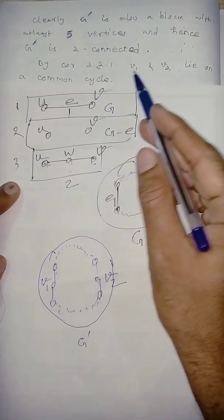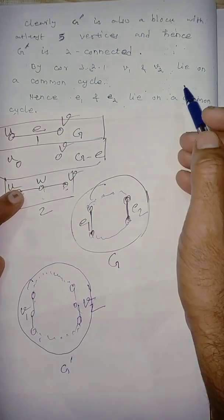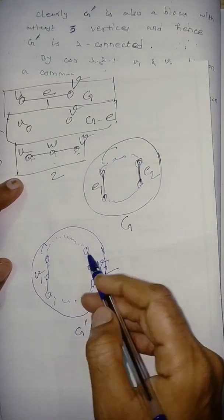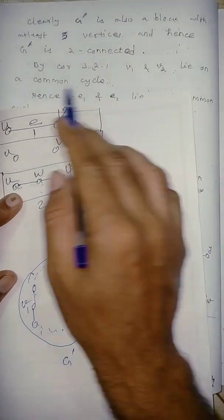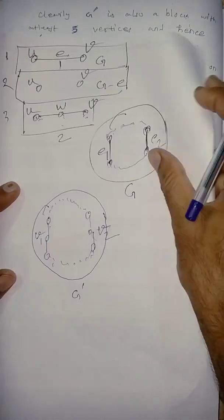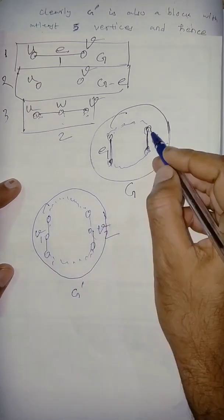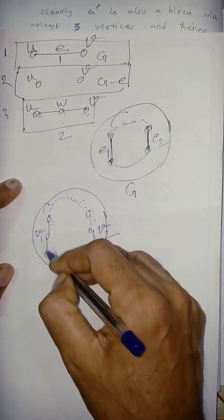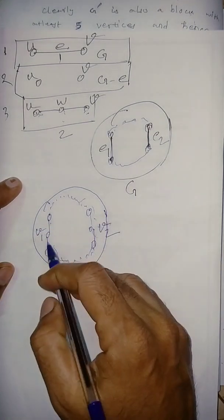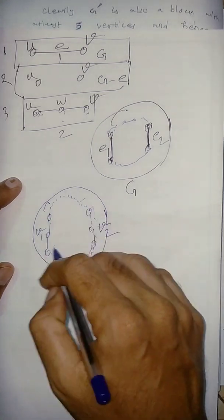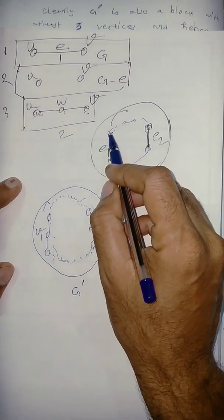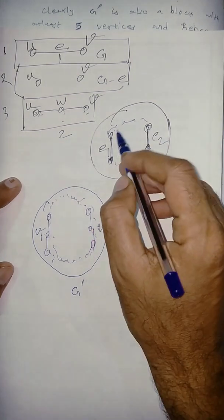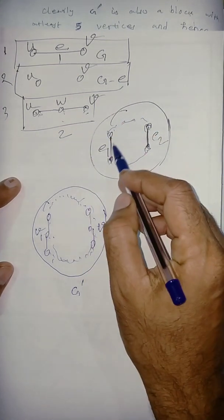So G-dash is 2-connected. By the previous corollary, v1 and v2 lie on a common cycle. Hence e1 and e2 lie on a common cycle, because e1 was subdivided to introduce v1 and e2 was subdivided to introduce v2 — so the edges themselves lie on that common cycle.